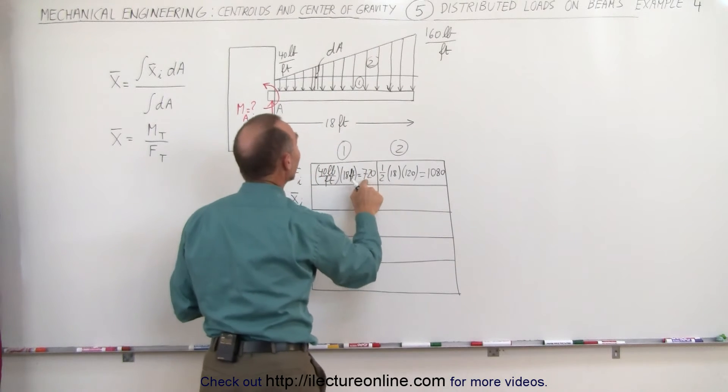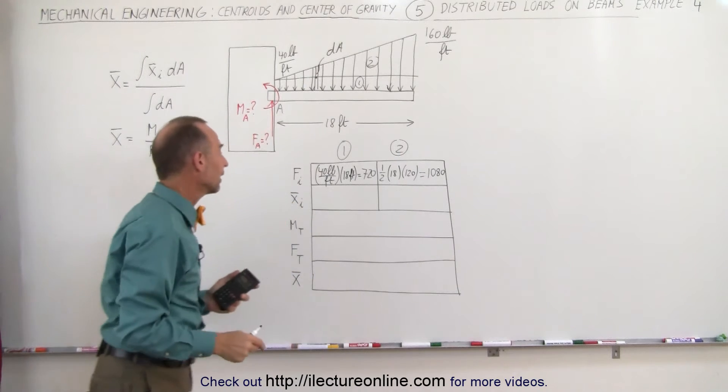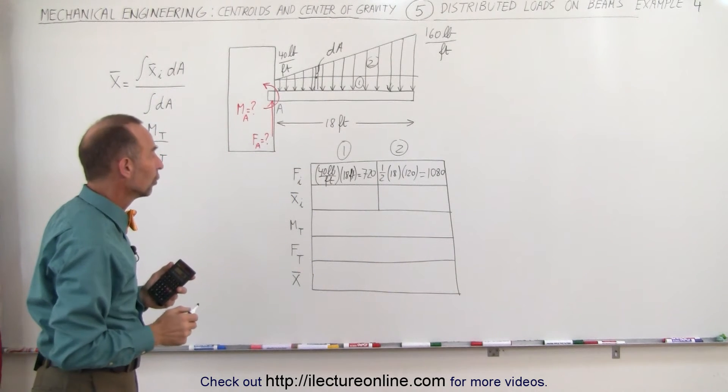So 720 pounds for the rectangular section, 1080 pounds for the triangular section. That gives us the force contribution of each segment of the force load.